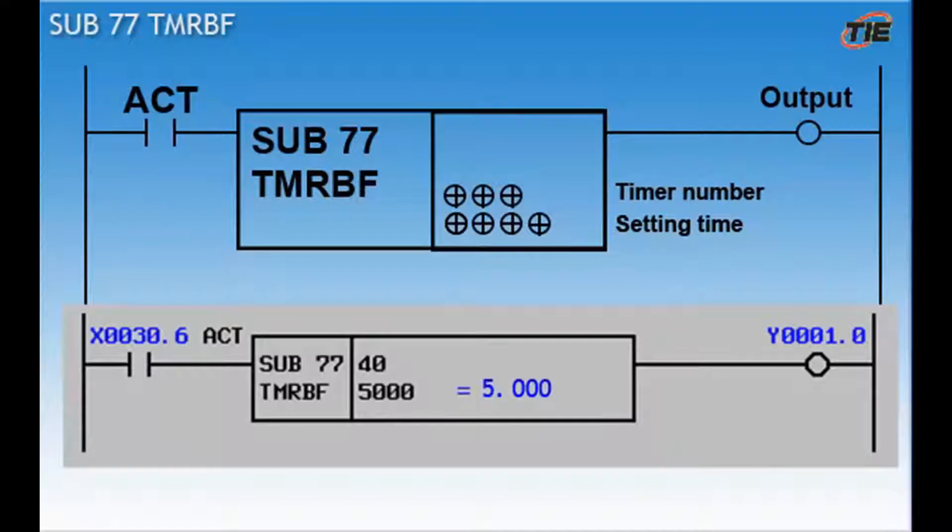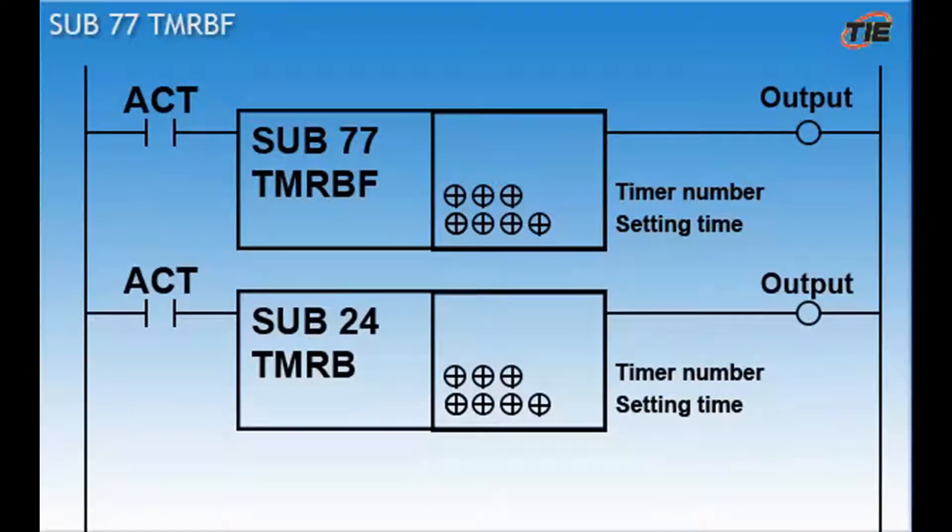The next timer I'm going to talk about is the sub 77 fixed off delay timer. This is called a TMRBF timer. It works a little bit different than the other timers. In this case, the output turns on as soon as the action command goes high. When the ACT command goes low, the output will stay on for the time shown here. Basically, this is an off delay timer. This is fairly new to the FANUC. Up until this time, all timers were on delay. TMRBF and TMRB timers share the same timer numbering system. Be sure to use a unique number for each. The time values can be set up to 546 minutes.